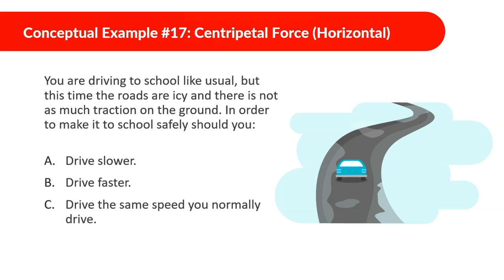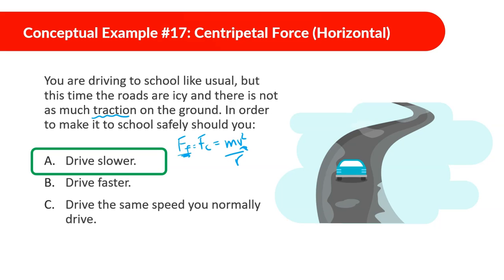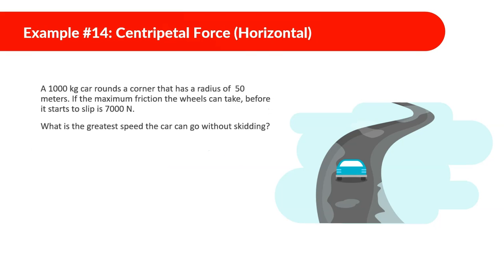You're driving to school but the roads are icy with less traction. Should you drive slower, faster, or the same speed? Less traction means less friction. Since friction equals the centripetal force (mv² over r), if your velocity is much lower you don't need as much friction. So driving slower means you'll be safer because there isn't much friction available to get you around corners.